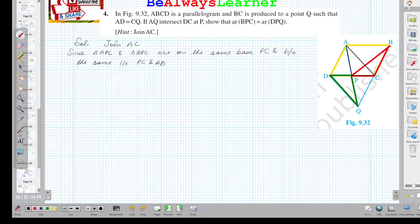Because of that, the area of both triangles APC and BPC are equal. This is equation number one.